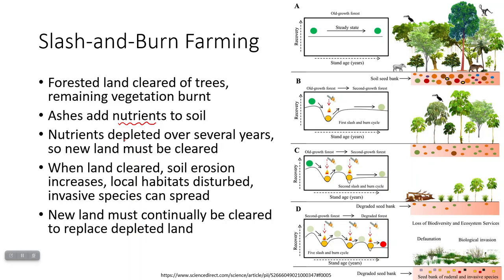Because of nutrient depletion, you have to clear new land. Until you grow crops there, you'll have increased soil erosion, increased runoff, disturbed local habitats, and the risk of invasive species coming in. You have to continuously clear new land to replace land where nutrients have been depleted.